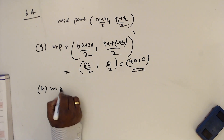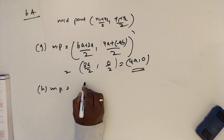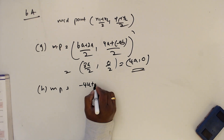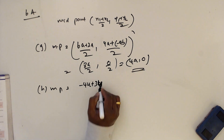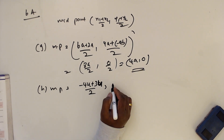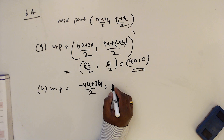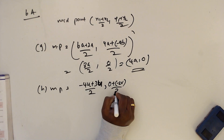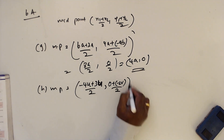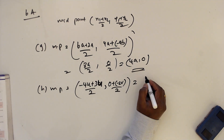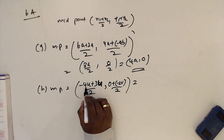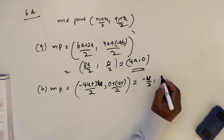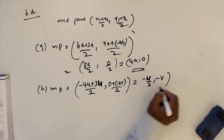Part h: midpoint is minus 4u plus 3u divided by 2 for the x value, and 0 plus minus 2v divided by 2 for the y value. So the x value is minus u divided by 2, and the y value is minus v. The midpoint is (minus u over 2, minus v).